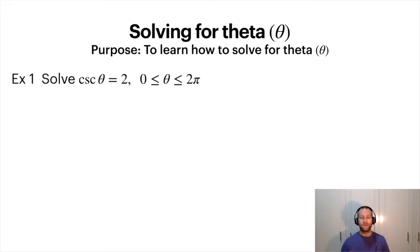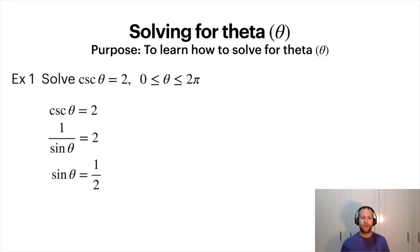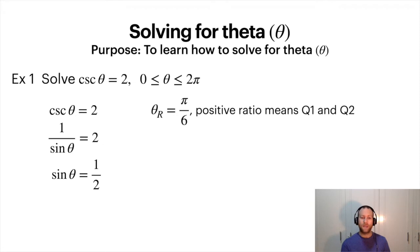Here's an equation: solve cosecant theta equals 2. We're going to solve for theta and we have a range from 0 to 2 pi. We need to manipulate this into something we can actually deal with. So 1 over sine theta equals 2, inverse both sides: sine theta equals one half. The reference angle for sine theta equaling one half — remember sine theta is the y value — when is y equal to one half? The reference angle is pi over 6, and because this ratio is positive, we're in quadrant one and two.